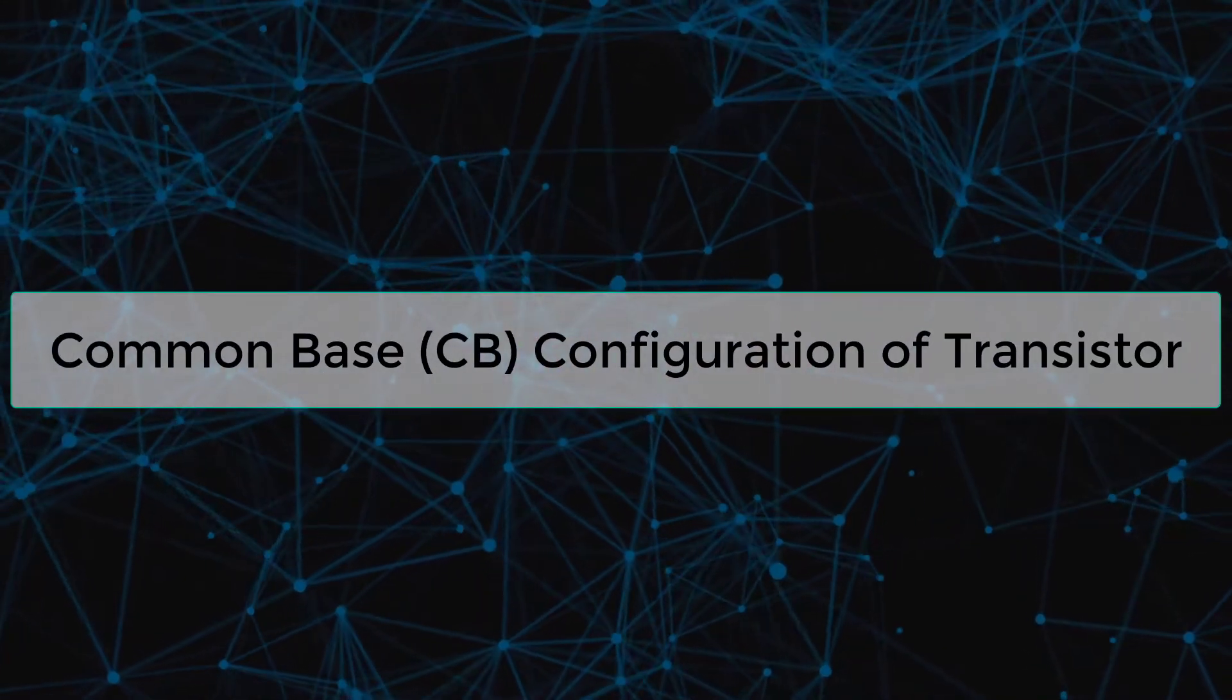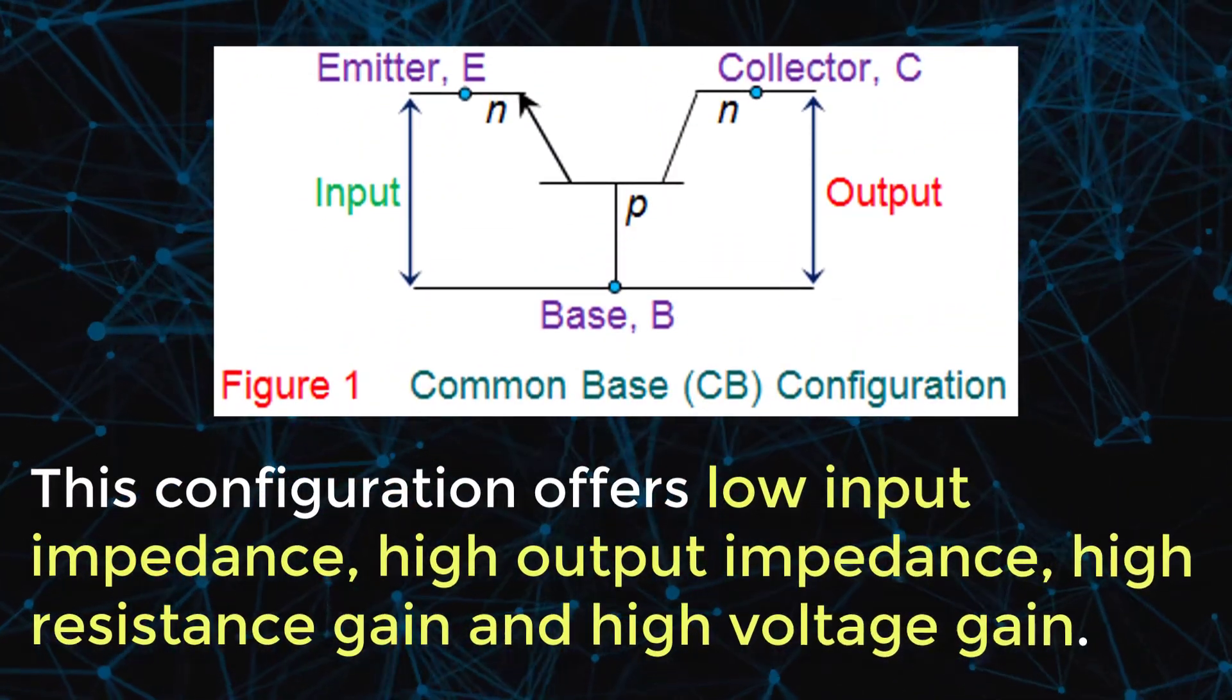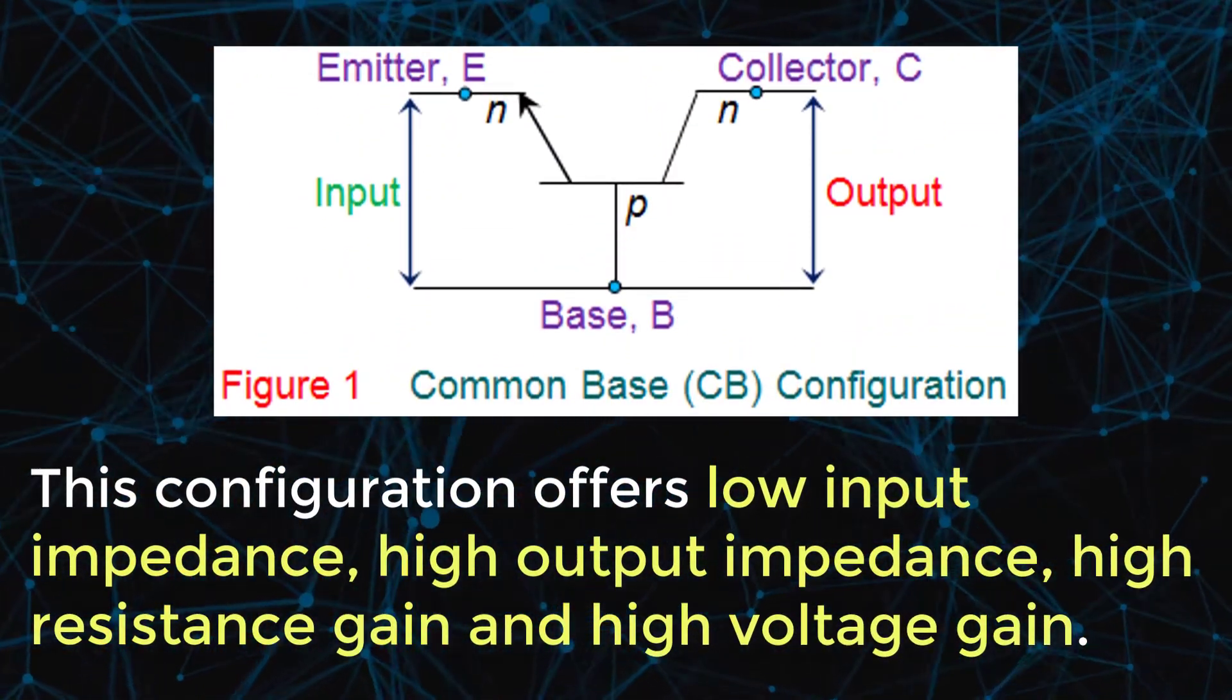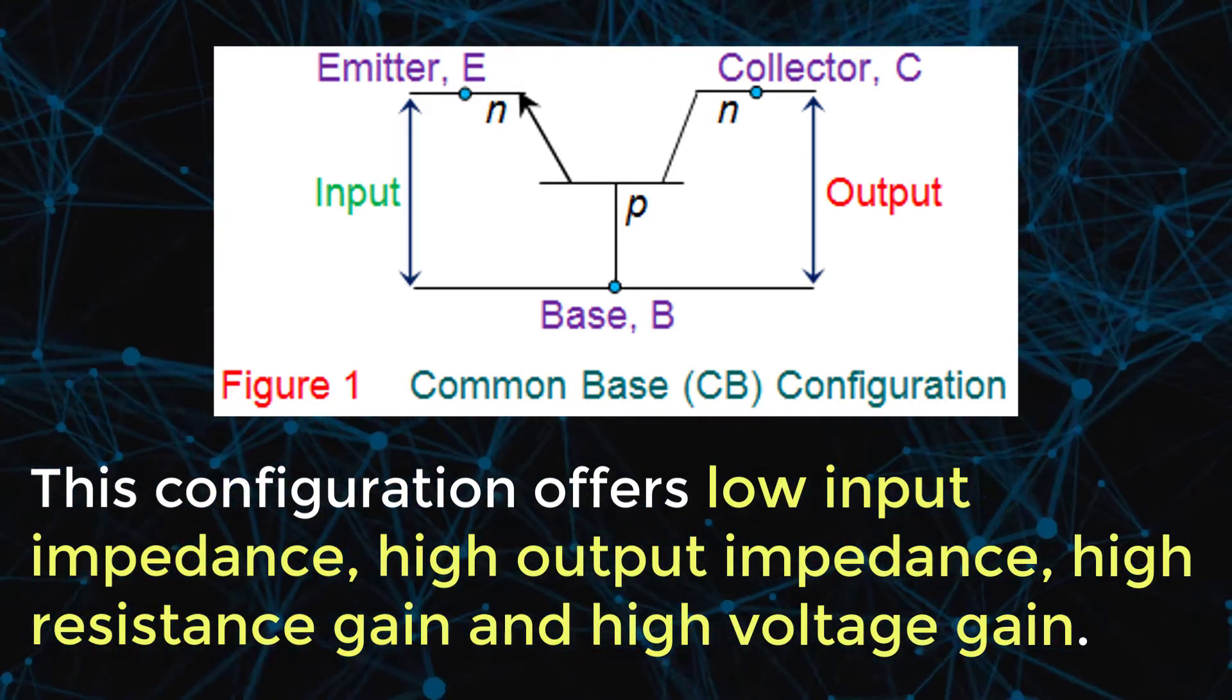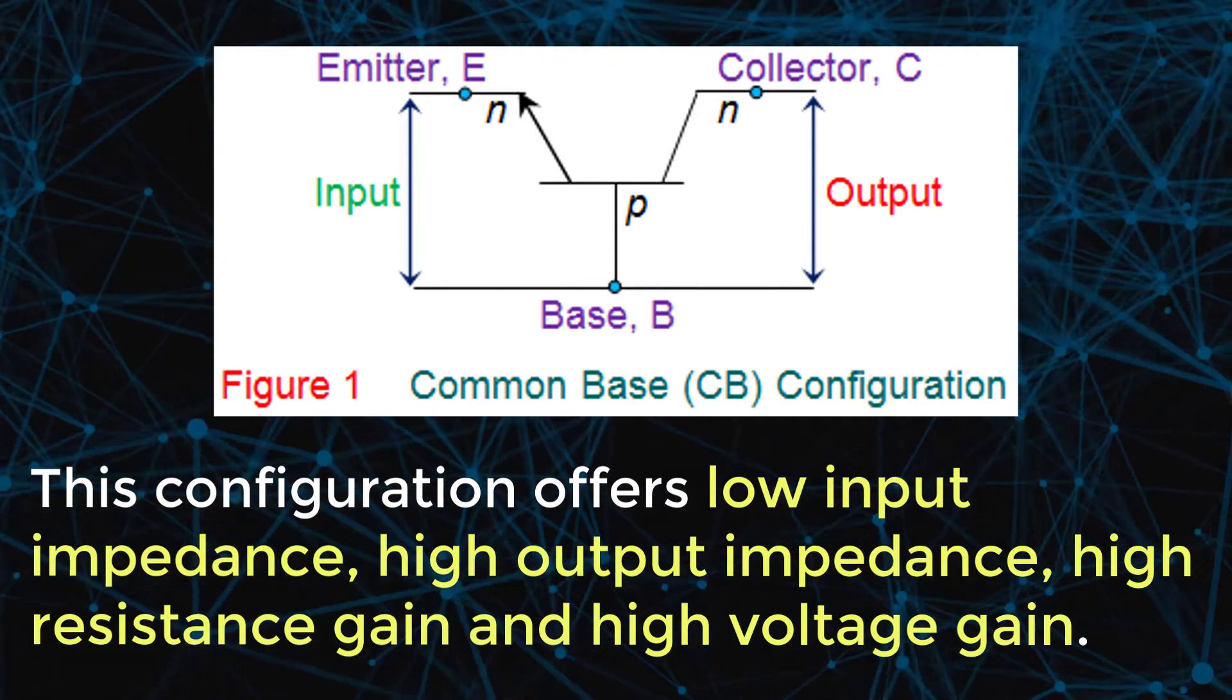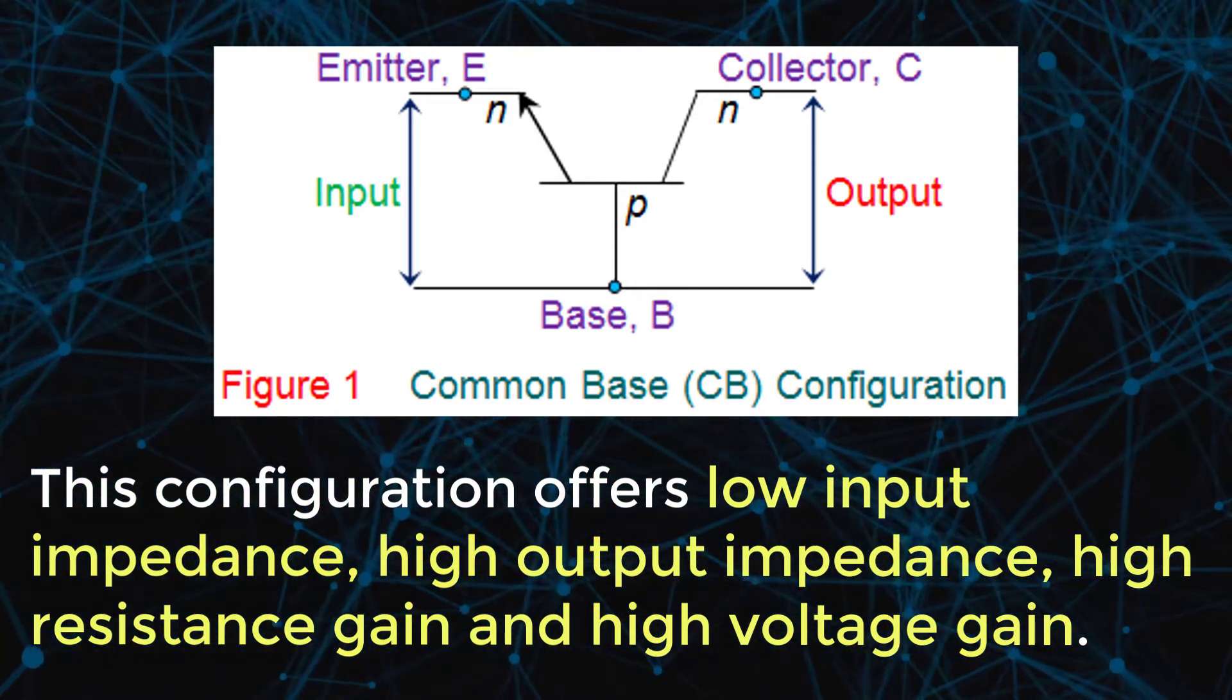In common base CB configuration, the base terminal of the transistor will be common between the input and the output terminals. This configuration offers low input impedance, high output impedance, high resistance gain, and high voltage gain.